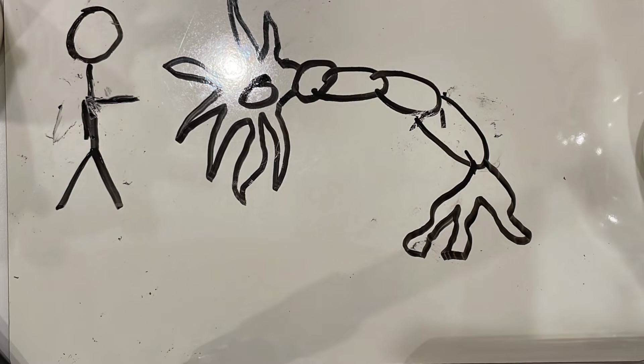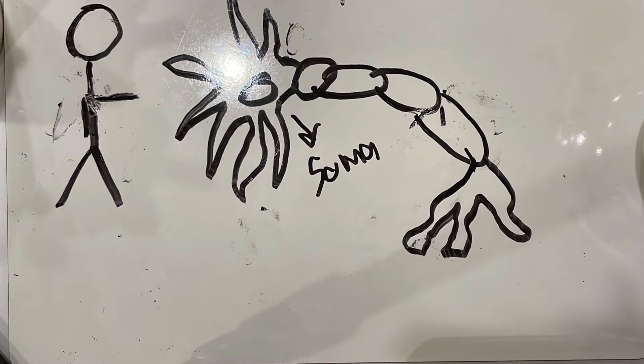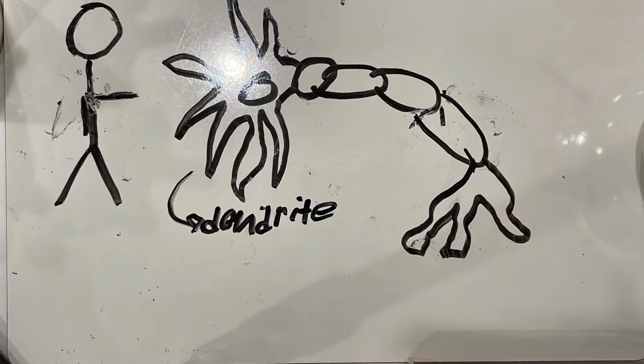Now, in our brain we have specialized cells called nerve cells. This is what a nerve cell looks like. There's the body or the soma of the cell. And the squiggly things coming out of the soma are dendrites. This is where the neuron receives chemical messages.